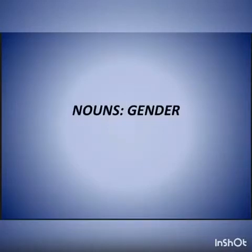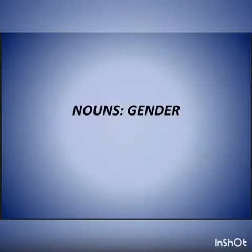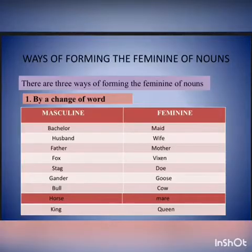In the last video we learned that there are four kinds of gender in the English language: masculine gender, feminine gender, common gender, and neuter gender. Today we are going to learn about the different ways of forming the feminine of nouns. There are three ways of forming the feminine of nouns.